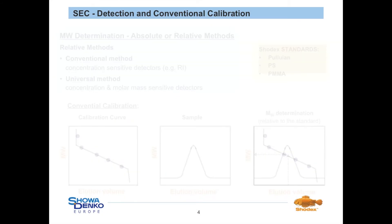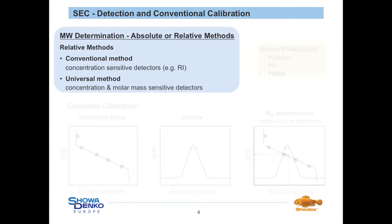Therefore when you have to choose a column it has to be ensured that the molecular weight range of your sample lies between both limits to achieve a separation and to obtain a correct result. In size exclusion chromatography there are two possibilities to determine the molecular weight and the molecular weight distribution of the compound of interest: either by absolute or relative methods.